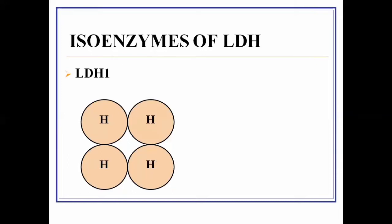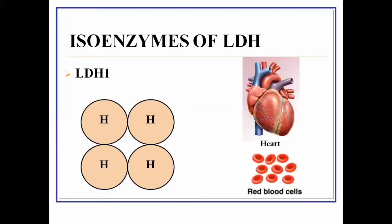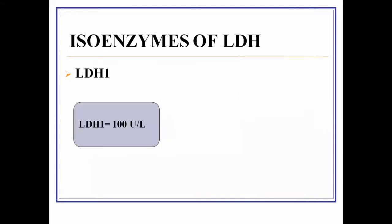LDH1 is specifically located in the heart and in red blood cells. A minute amount of LDH1 is also present in plasma. The normal value of LDH1 in blood is 100 units per liter. If this level is exceeded, it indicates certain pathologies or diseases.